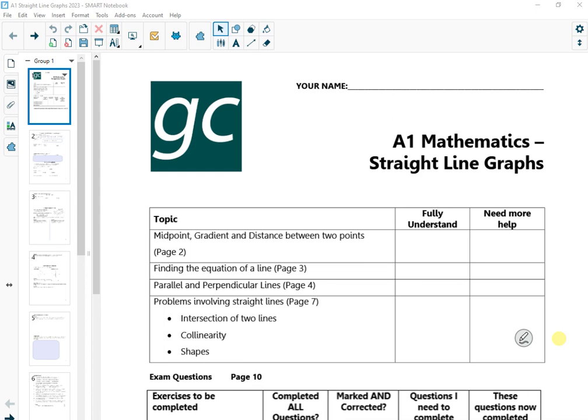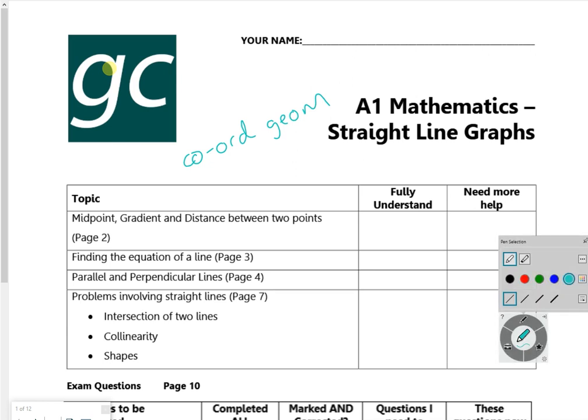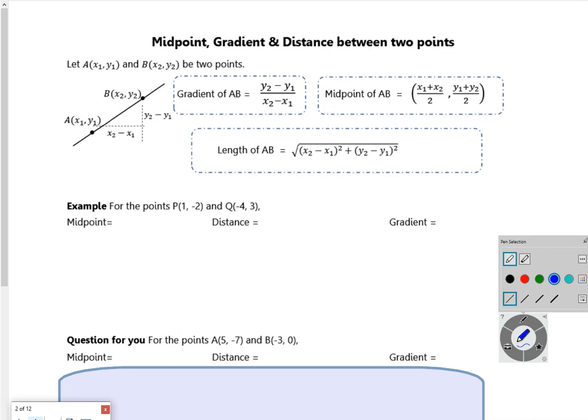Hi everybody. This is the first lesson of the straight line graph path. It's only worth two lessons. Some people call this coordinate geometry, so if you look it up anywhere, it might be listed under coordinate geometry. Let me set up my colors - we'll go blue.